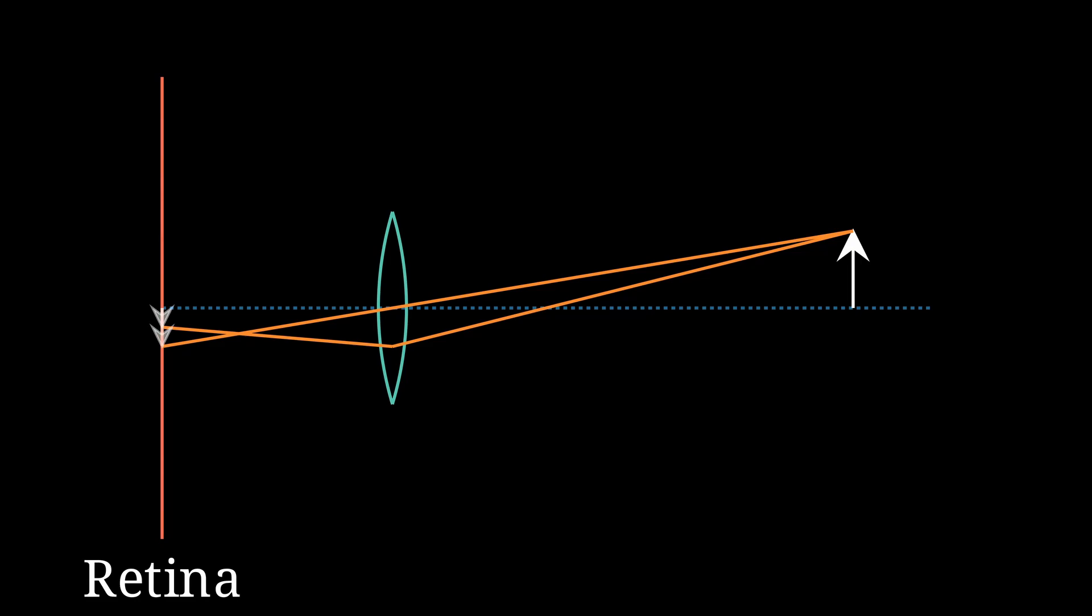You can also estimate distances using focus, that is, you look at an object, adjust the focus of your eye until it's looking nice and sharp, and then estimate the distance to the object based on how much you had to flex your focusing muscles. For the purposes of this video, we're going to look at just one method of estimating distance: binocular vision.